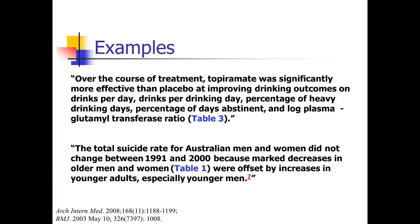Here's another example. This one says: the total suicide rate for Australian men and women did not change between 1991 and 2000, because marked decreases in older men and women were offset by increases in younger adults, especially younger men. What's in the table is just a list of suicide rates from 1991 to 2000, broken down by overall, gender, and age. The author is giving a high-level summary: there's no change overall, but looking at subsets, there's a decrease in one group and an increase in another — overall trends without detailing every number.